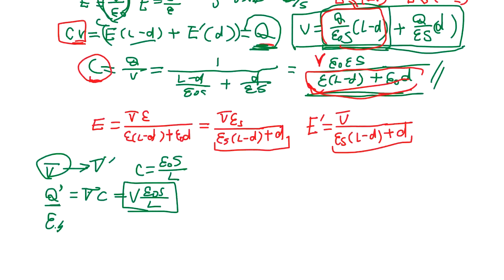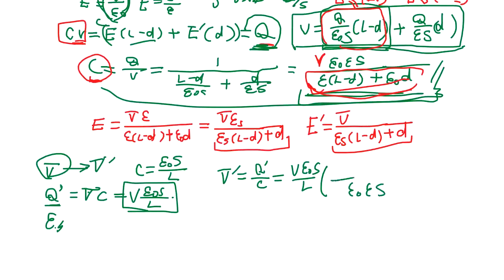Okay? So, what happens is, capacitor is same. No change. So, V prime is Q prime minus C. So, Q prime is this, V, Q prime minus C. And C is here. So, C is here.